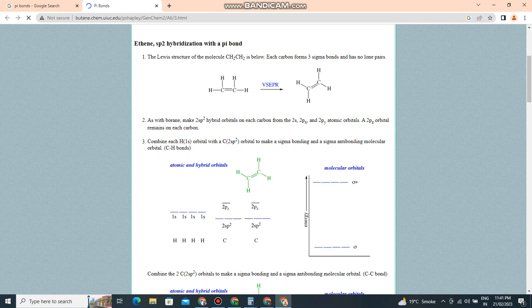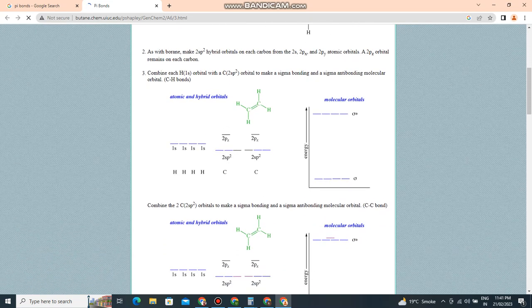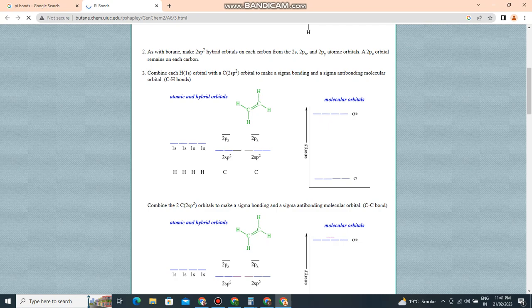Each carbon makes two sp2 hybrid orbitals, one on each carbon, from the 2s, 2px, and 2py atomic orbitals.